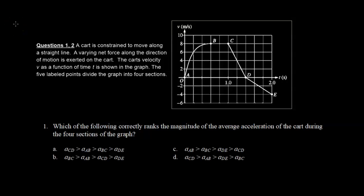Now let's take a look at some multiple-choice question problems. A cart is constrained to move along a straight line. A varying net force along the direction of motion is exerted on the cart. The cart's velocity V has a function of time t as shown in the graph. The five labeled points divide the graph into four sections. Which of the following correctly ranks the magnitude of the average acceleration of the cart during the four sections of the graph?